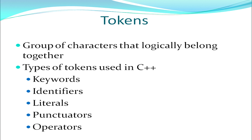We move on to the next topic, which is tokens. When I group characters to perform a particular job — characters that logically belong to each other to perform a particular job — they form tokens. The types of tokens used in C++ are keywords, identifiers, literals, punctuators and operators.